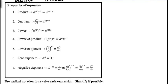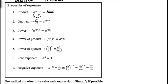We'll review the properties of exponents. When multiplying with the same base, add exponents. When dividing, subtract exponents. When raising a power to another power, multiply exponents. When raising a product to a power, raise each factor to that power — a to the nth times b to the nth. Anything raised to the zero power is 1. A negative exponent means a to the negative n equals 1 over a to the positive n.